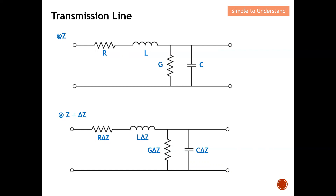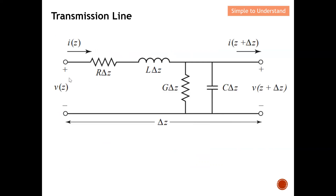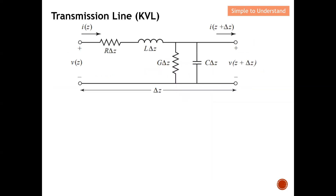Now I'm going to explain Kirchhoff's Voltage Law and Kirchhoff's Current Law. The voltage on the left-hand side is at position z, and the voltage at z + Δz is slightly different. Similarly, the current values differ between the two ends. To apply Kirchhoff's Voltage Law, we draw a closed loop around the circuit.